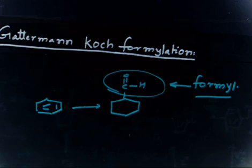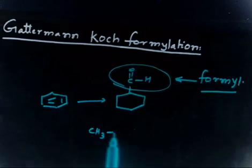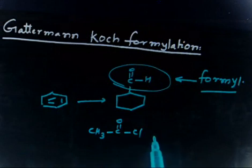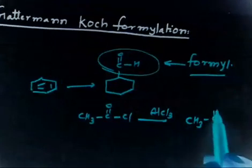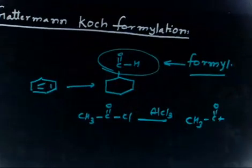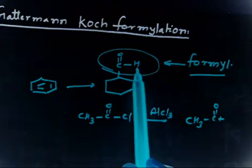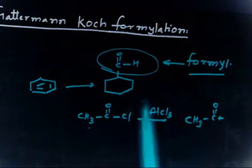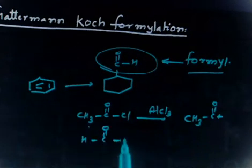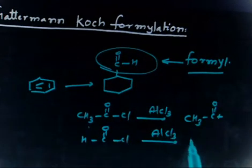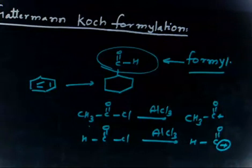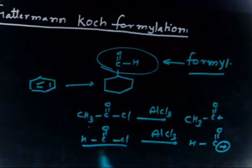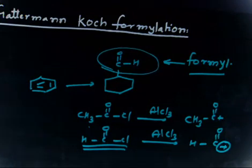If you remember Friedel-Crafts acylation, I have CH3COCl. If I treat with AlCl3, I get an electrophile CH3CO+, and then attack the electrophile. If I replace this hydrogen with CH3, I can take HCOCl, treat with AlCl3, I will get a carbocation, and now I can attack and get this formylation over. So it seems if I take HCOCl, I can do formylation with AlCl3. Are you getting or not?